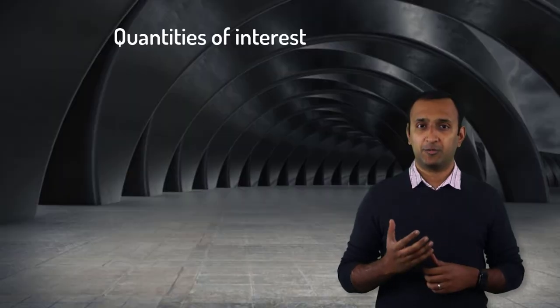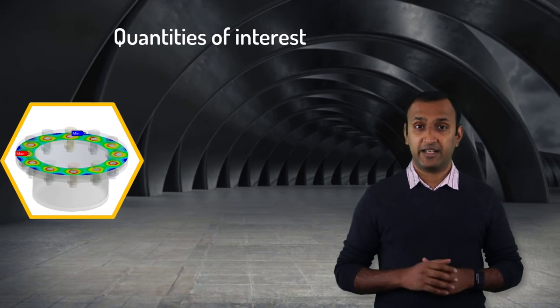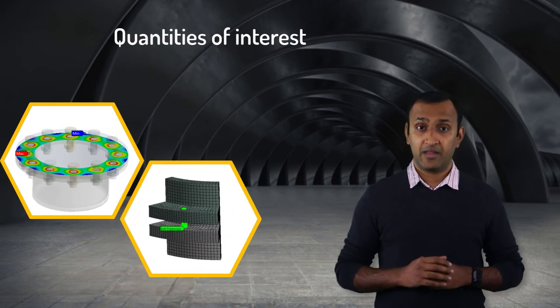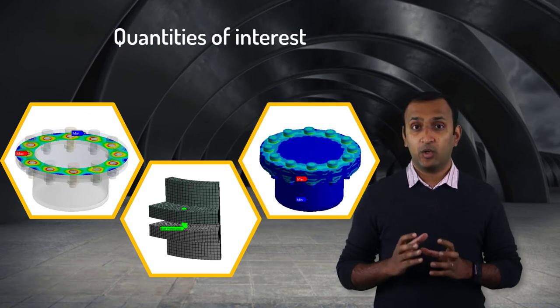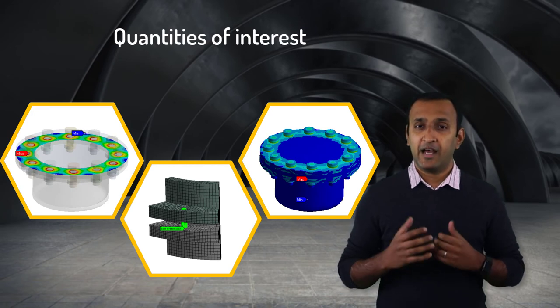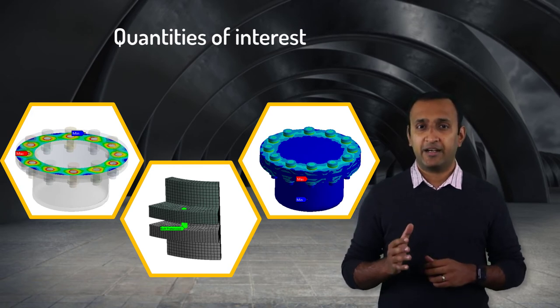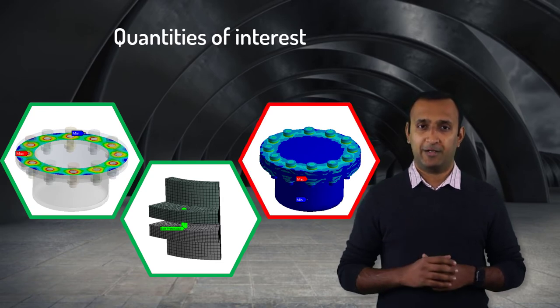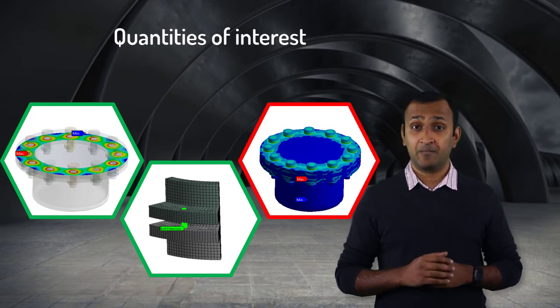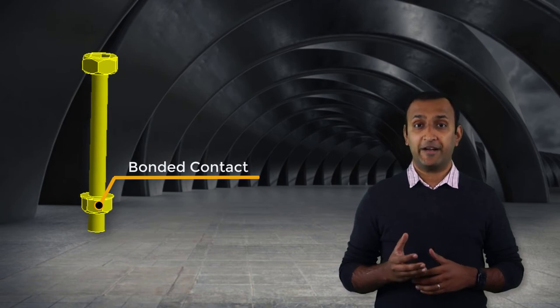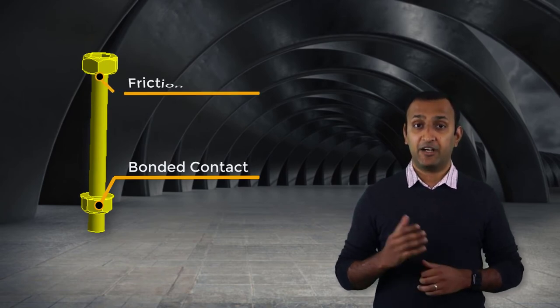A requirement for such models is to measure the contact pressure in the gasket, the preload in the bolt in the presence of external loads, and accurate stress distribution in both the bolts and the surrounding parts. A beam connection can cater the first two requirements, but it may not be suitable for the third requirement. So in this case, we'll need to use solid elements to model bolts and connect them to the rest of the assembly using bonded contacts at threaded locations and frictional contacts elsewhere.